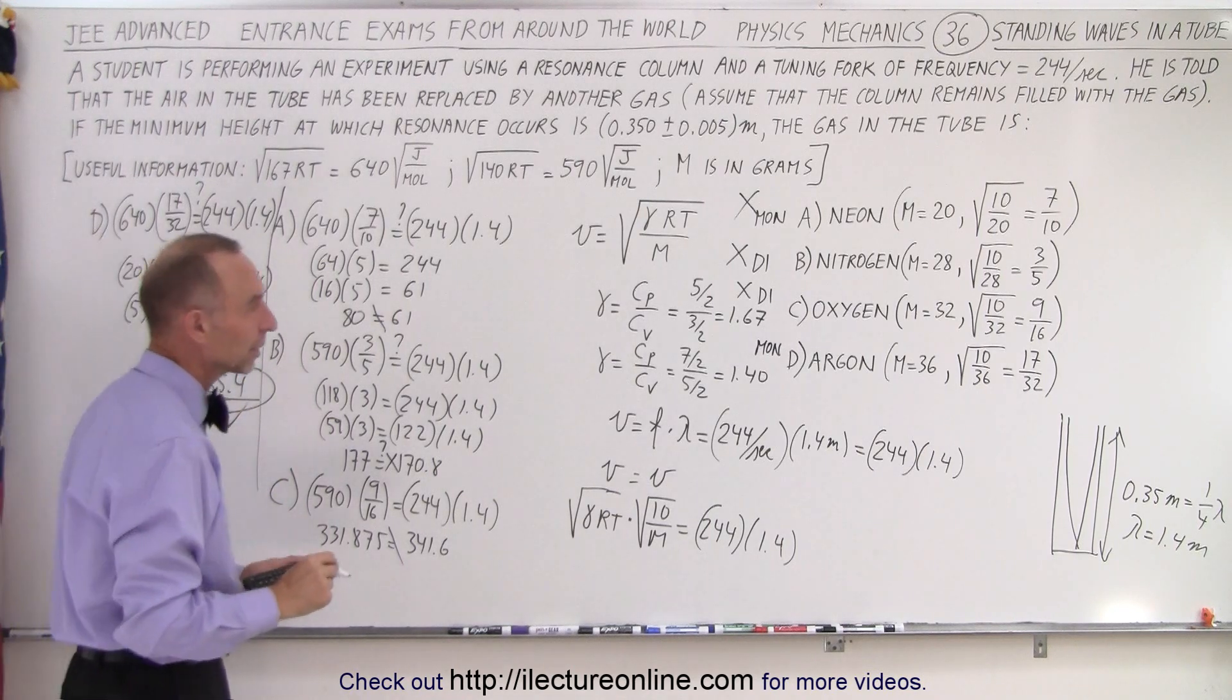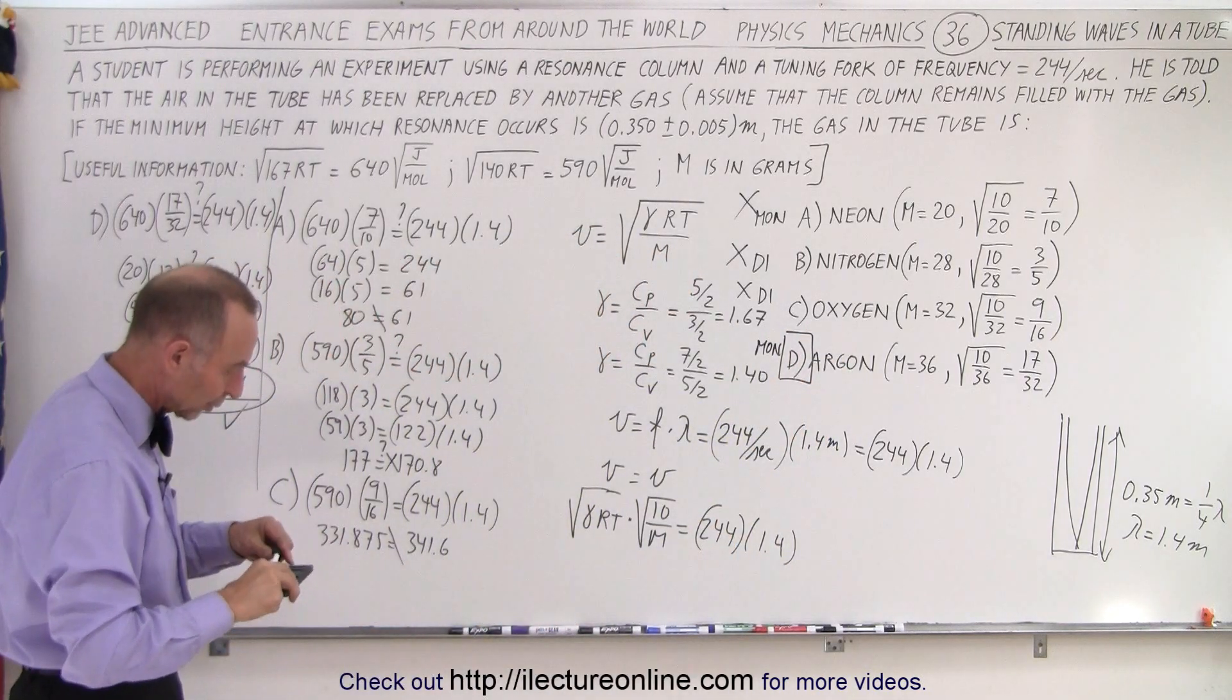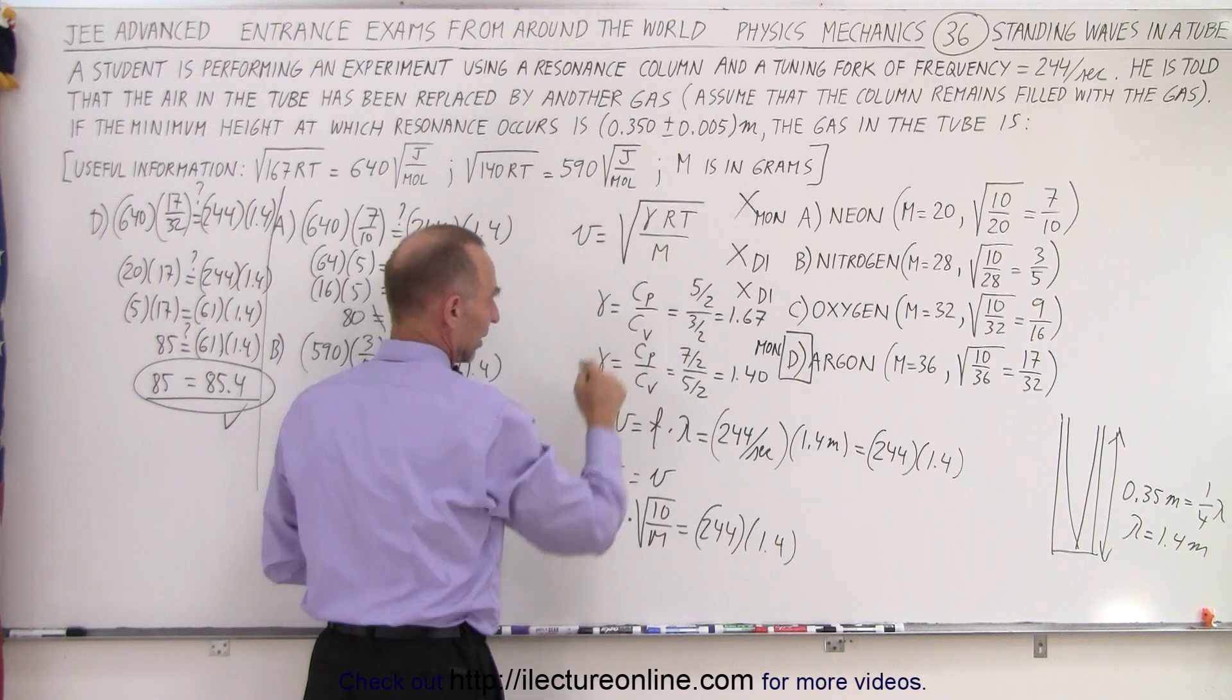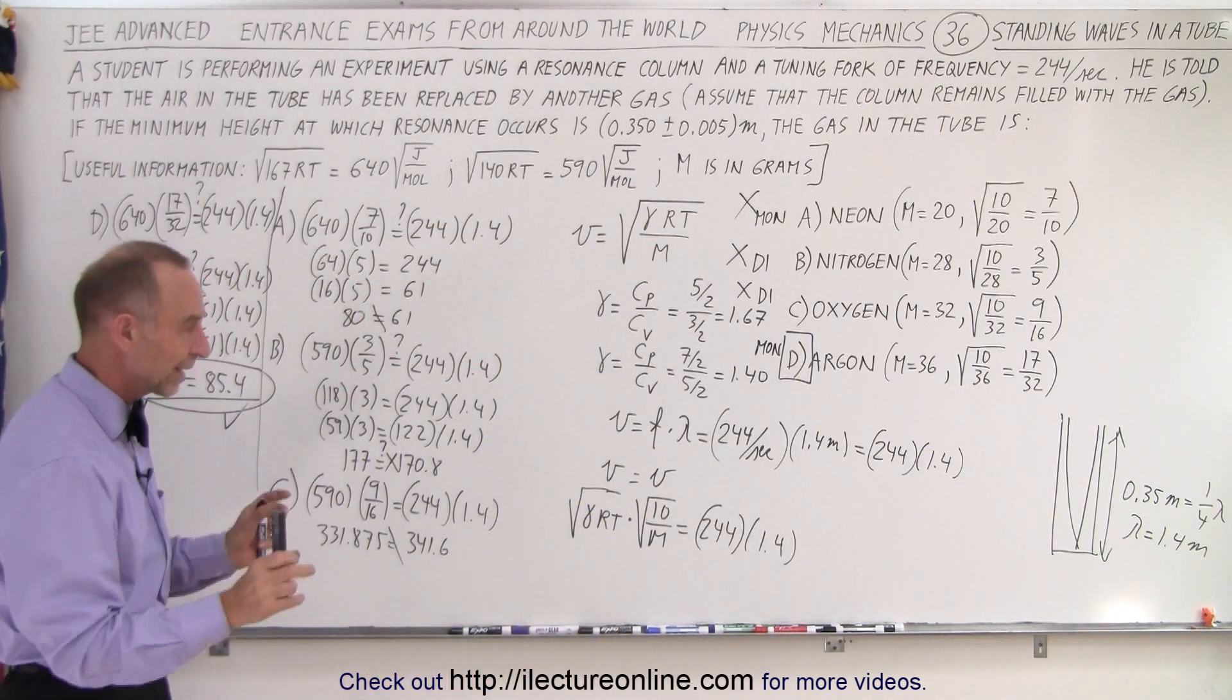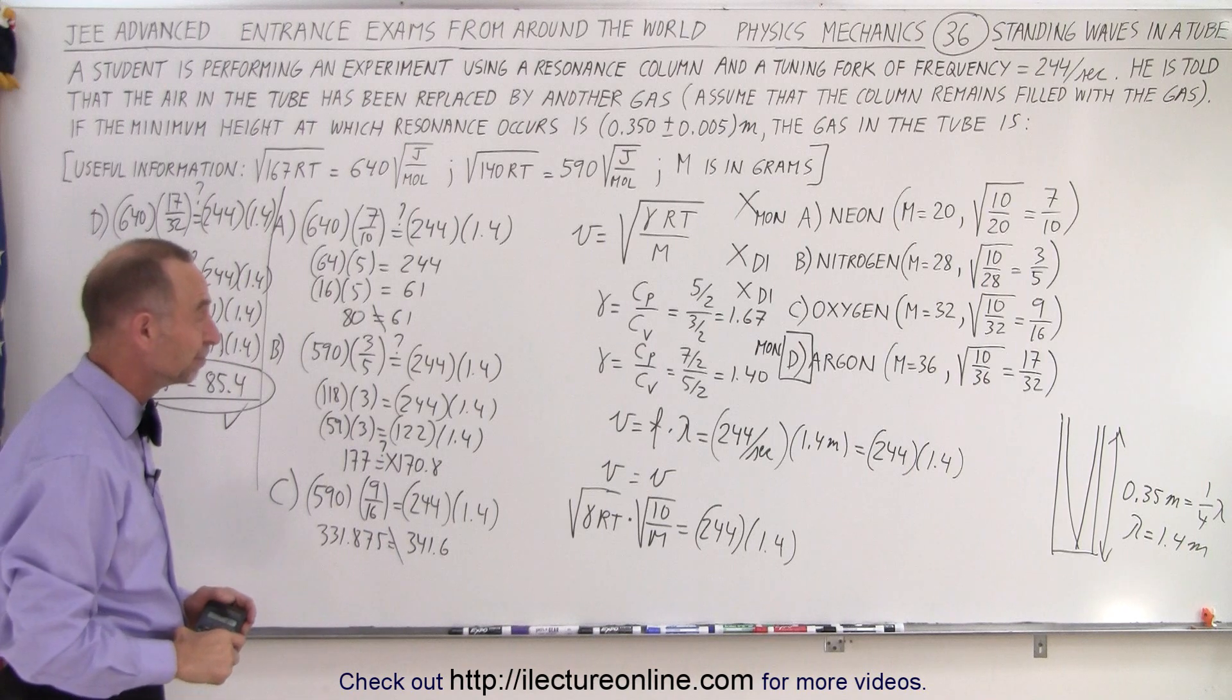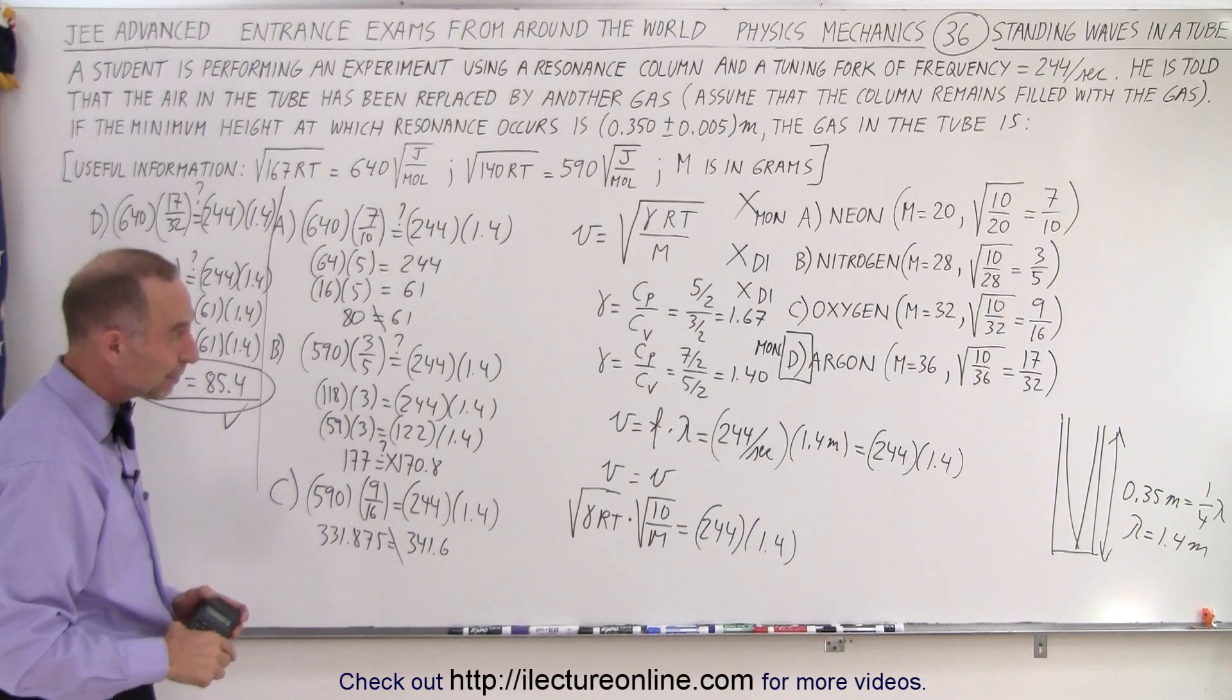I believe that this would then be the correct answer. So in this case, D is the gas. It's argon gas in that gas tube, and that's the only one that gives you a close enough comparison between the velocity calculated like this and the velocity calculated like this. When you set them side by side, you want to make sure you get the same value for both when you plug in the corresponding numbers. And that is how it's done. Yes, I did use a calculator. Otherwise, you'd have to work this out by hand, and you'd be hard-pressed to get it done in three minutes.